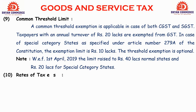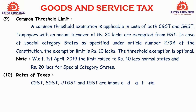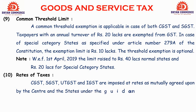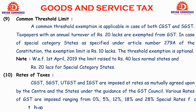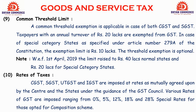Next characteristic: rates of taxes. CGST, SGST, UTGST, and IGST are imposed at rates mutually agreed upon by the center and states under the guidance of the GST Council. Various rates of GST range from 0%, 5%, 12%, 18%, and 28%. Special rates are applicable for those who opt for the composition scheme.